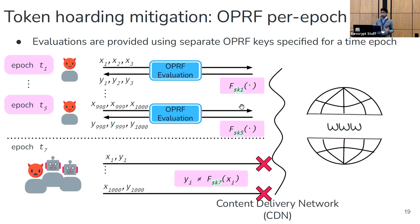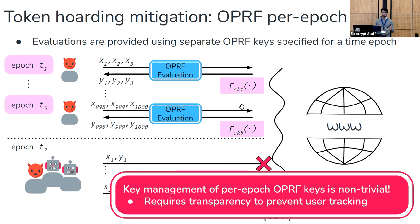With per-epoch OPRF keys, malicious users can still hoard tokens over many epochs, but come time to mount the attack at some later epoch, those tokens will have expired and will not be accepted by the CDN. While this per-epoch solution works just fine, a deployment challenge is that key management of these many per-epoch OPRF keys is somewhat non-trivial. Without proper transparency infrastructure making the mapping of which OPRF key corresponds to which time epoch easily verifiable by users, users are potentially susceptible to tracking attacks by a malicious CDN.